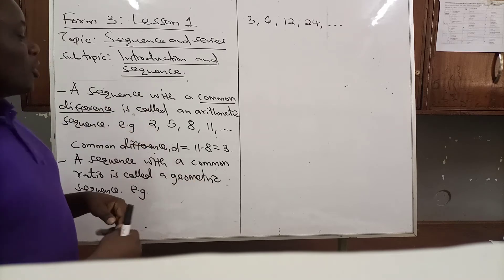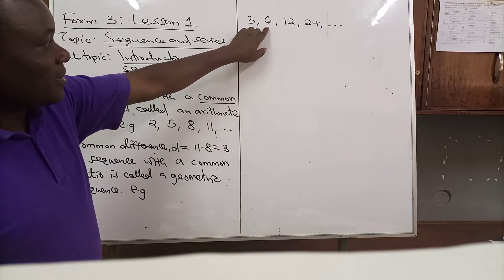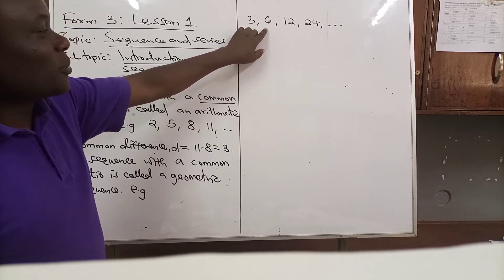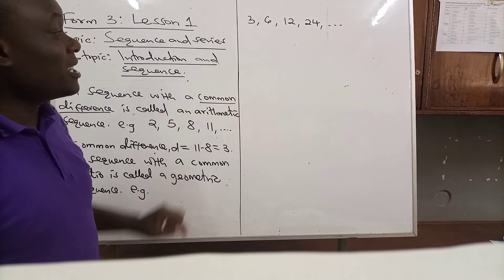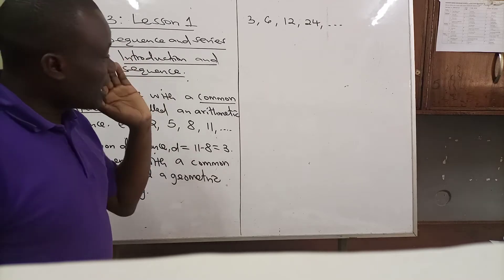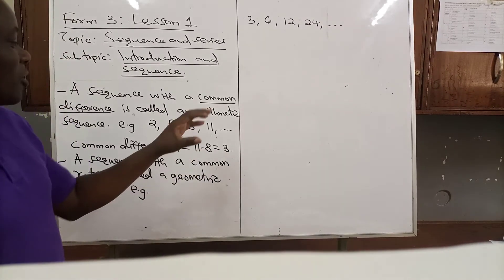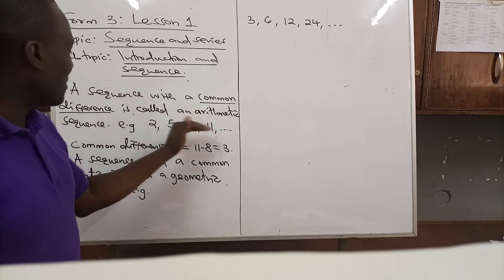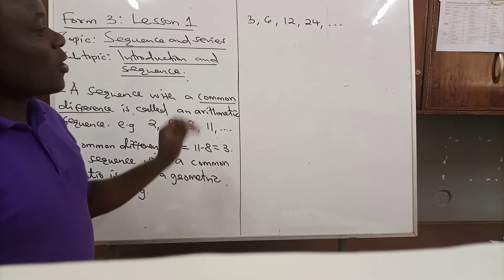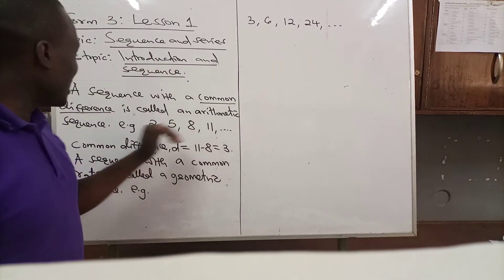Can we prove whether it's going to be a geometric sequence or an arithmetic sequence? Yes, we can. If you take 6 minus 3 you get 3; 12 minus 6 you get 6; 24 minus 12 you get 12. The differences are not equal, which means it cannot be called an arithmetic sequence, because the difference between two consecutive terms is not constant.